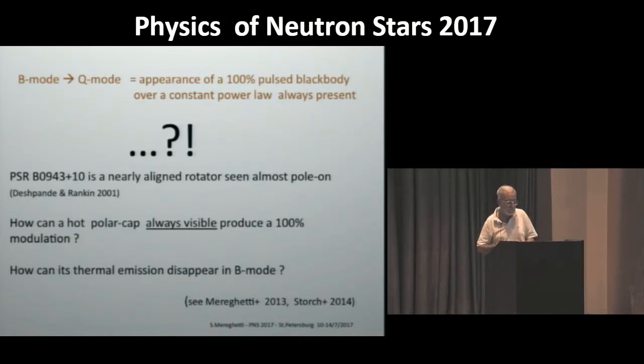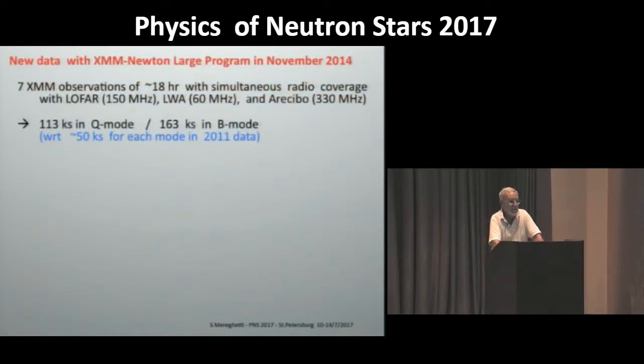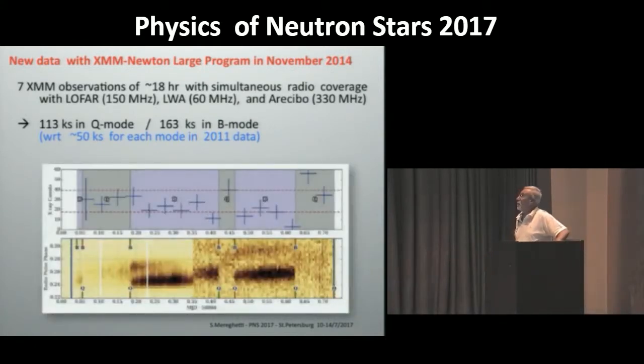So to try to better understand this object, we got more data. We got a large program with XMM-Newton, and we had simultaneous observation. We had to use radio telescopes in Europe and in the States in order to have a continuous coverage of the X-ray data. This is an example of one session. We had seven of these long observations. These are the radio data in which you see the different modes, Q, B, Q, B. And these are the light curves derived with the maximum likelihood analysis from the X-rays, in which you already can see that indeed the source changes its flux correlated to the radio modes.